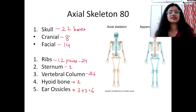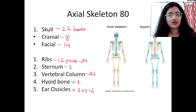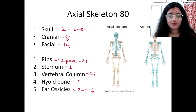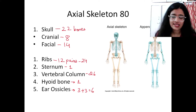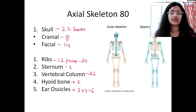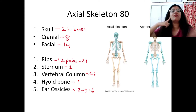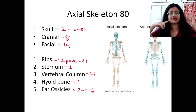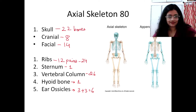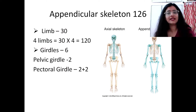The axial skeleton is divided into: skull with 22 bones (cranial 8, facial 14), ribs 12 pairs that is 24, sternum 1, vertebral column 26, hyoid bone 1, and ear ossicles 6 — malleus, incus, and stapes on each side.